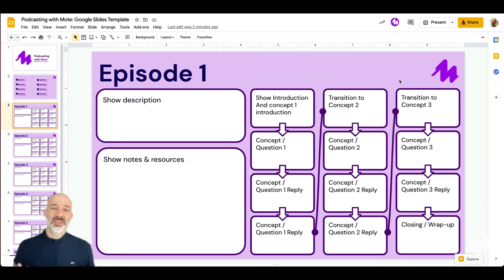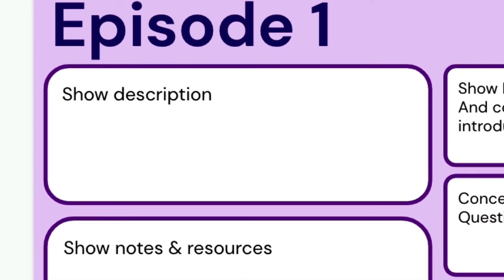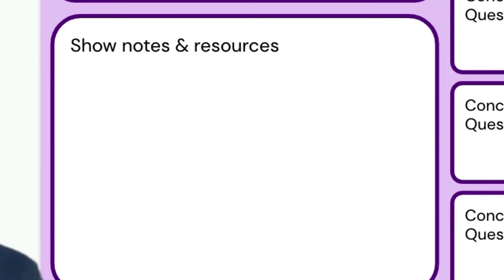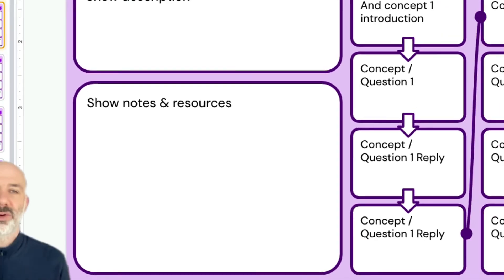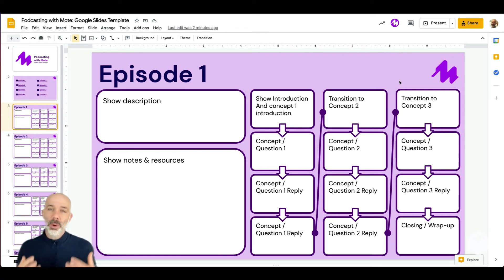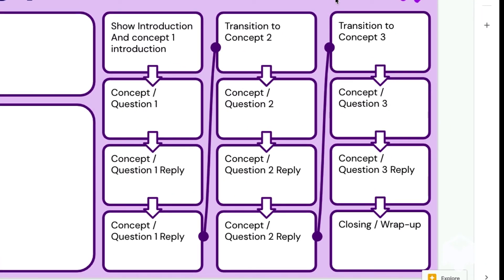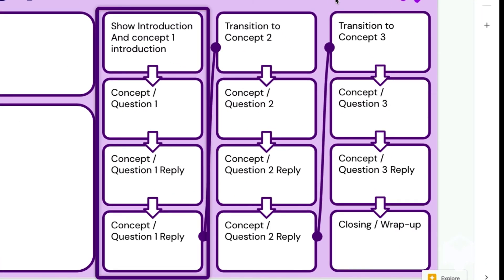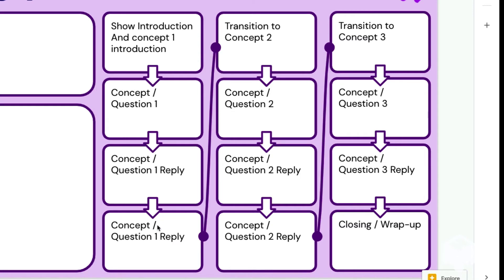Every slide is built out exactly the same. We have a place for the show or episode description, a workspace where students can have notes or resources, maybe a little introduction or overview to what they're going to explore. I've built out three columns of ideas. The first column is where students introduce the show and concept by adding a 90-second Mote audio clip. Then in subsequent boxes they can pose a question focusing on that concept, with a space for the question reply — and then another reply in that first column. Then students advance and transition to concept two.